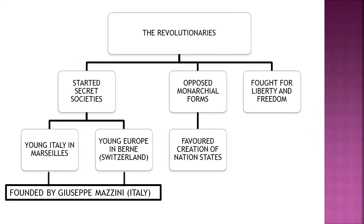On one side, European monarchies were turning autocratic. On the other side, revolutionaries existed in most parts of Europe, and they fought for the creation of a nation state. They opposed monarchical forms, wanted to change the system of government, fought for liberty and freedom, and even started secret societies to achieve their aims — secret societies were like secret clubs where they met and decided plans.